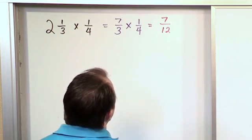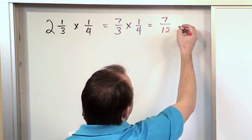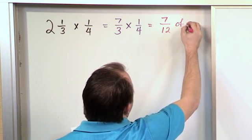We try to reduce it and we can't reduce this anymore so this is it. So seven twelfths of what? Of a pound.